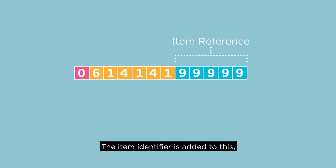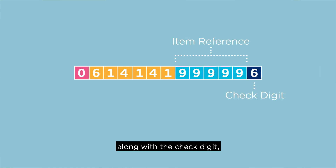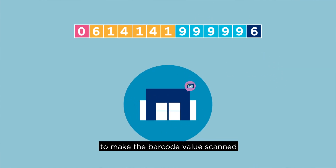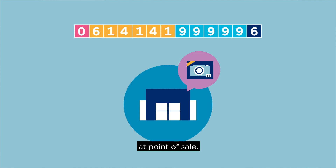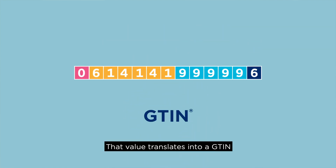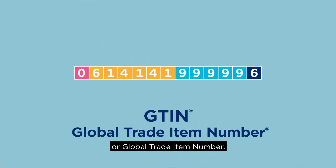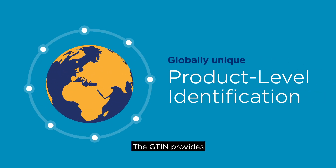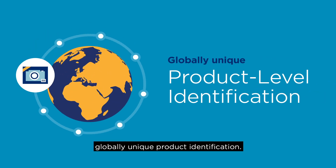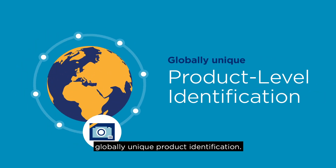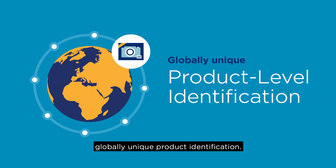The item identifier is added to this, along with a check digit, to make the barcode value scanned at point of sale. That value translates into a GTIN, or Global Trade Item Number. The GTIN provides globally unique product identification.